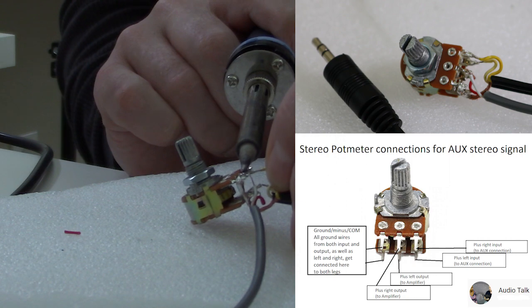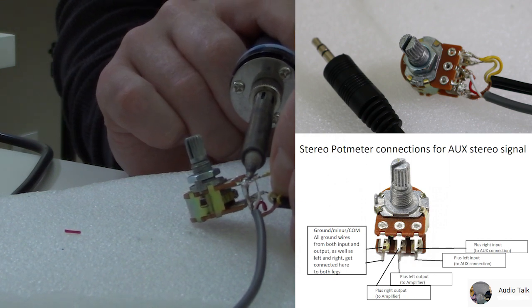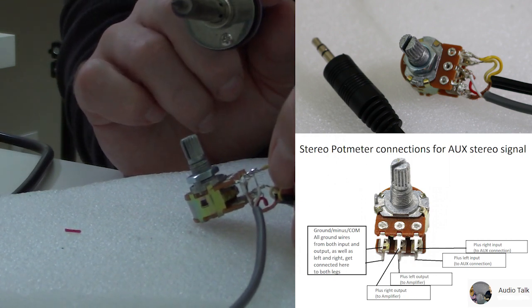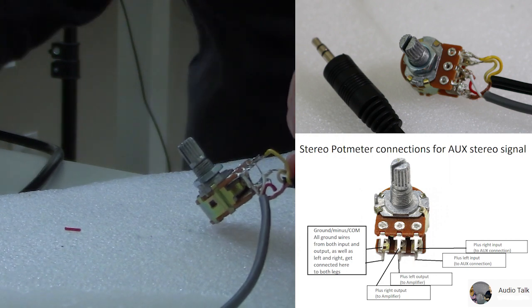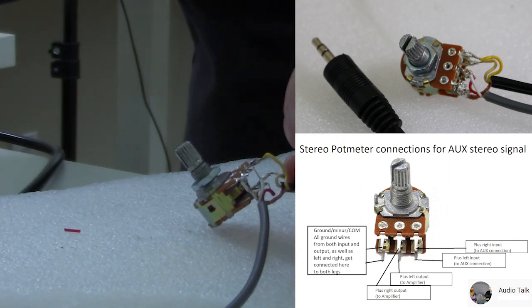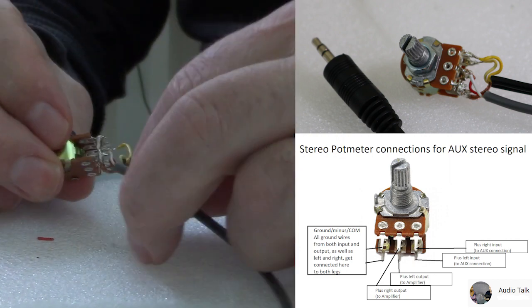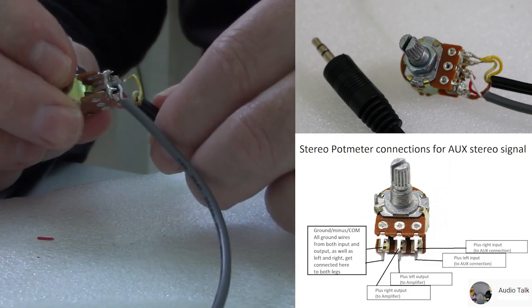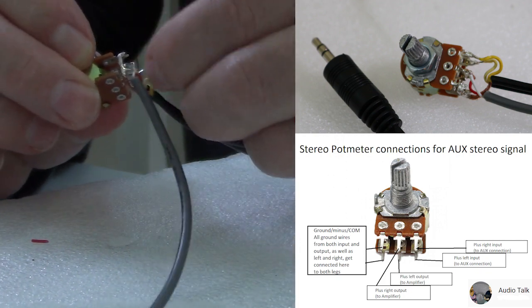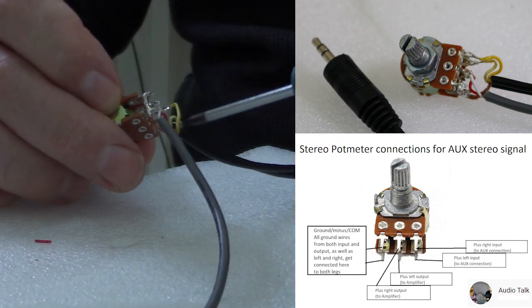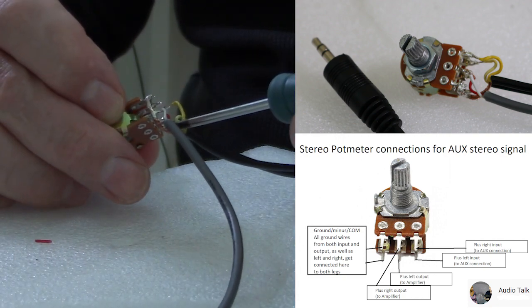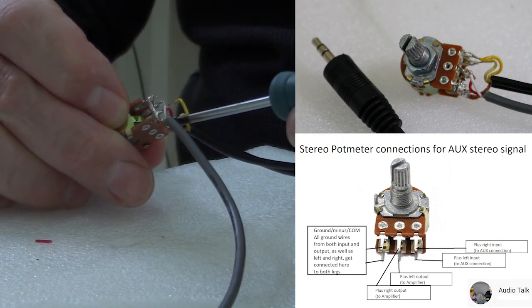We connect all the grounds together on one side, and then you have the output to the amplifier left and right in the middle of the potentiometer, and on the very right side you have the input coming from the AUX signal. It's a 10k ohms potentiometer and logarithmic.